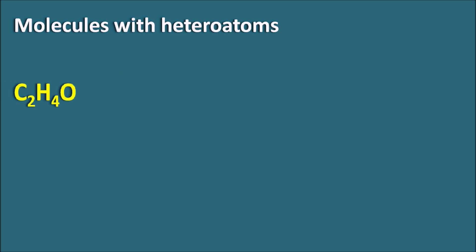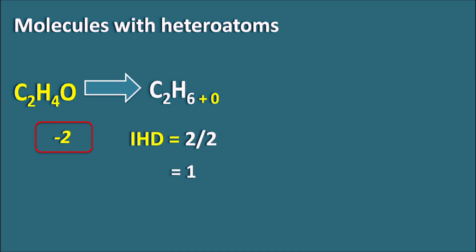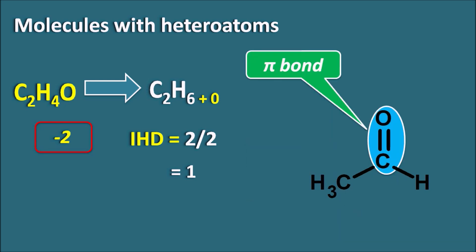Let us take another example: a molecule with molecular formula C2H4O. The saturated compound molecular formula will be C2H6. We apply the correction for oxygen, which is 0, so it remains C2H6. The difference between the hydrogens is minus 2, which indicates the IHD value as 2 divided by 2, equal to 1. This compound has an IHD value of 1, meaning it may have either a cyclic compound or a pi bond. Since there are only two carbons, it is not a cyclic compound, so it will have a pi bond — this is acetaldehyde, which has a carbonyl group with a pi bond.